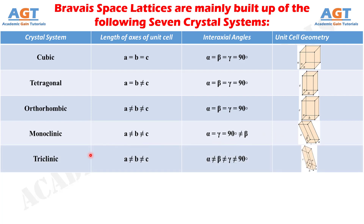The fifth crystal system is the triclinic system. In Bravais lattices with triclinic systems, the lengths of axes A, B, and C of the unit cell are not equal to one another. Their corresponding angles alpha, beta, and gamma are also not equal to one another, and none of these three interaxial corresponding angles are equal to 90 degrees, as we can see in an example of triclinic system in this figure.